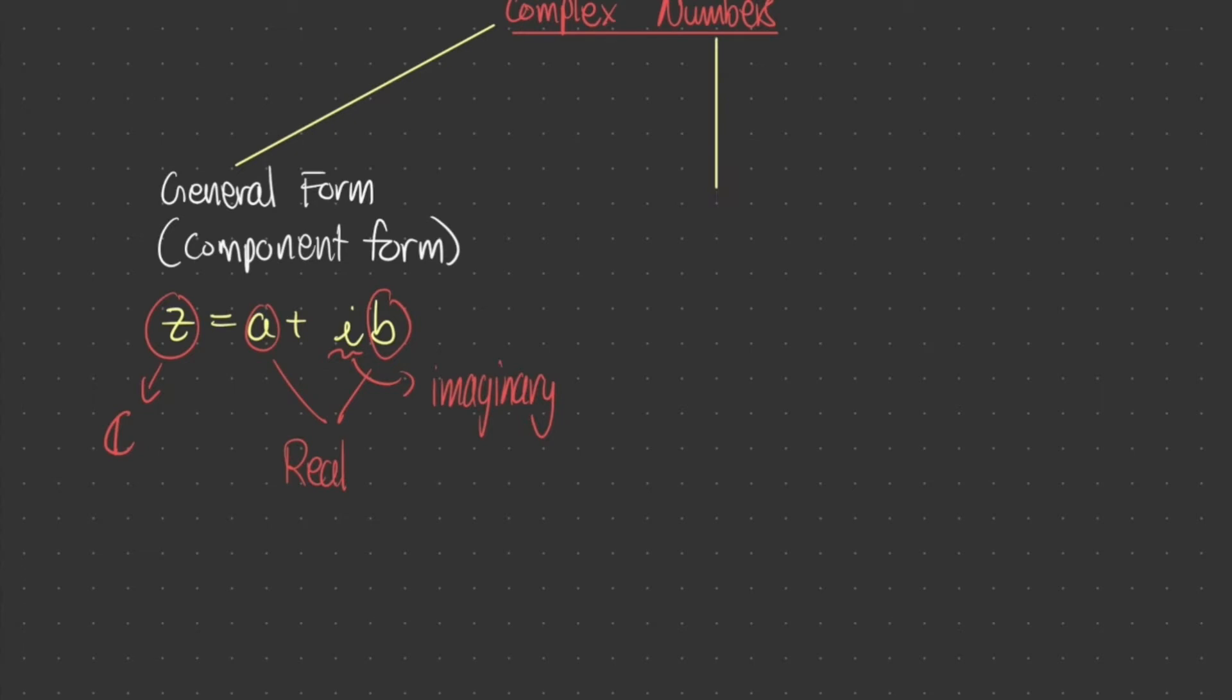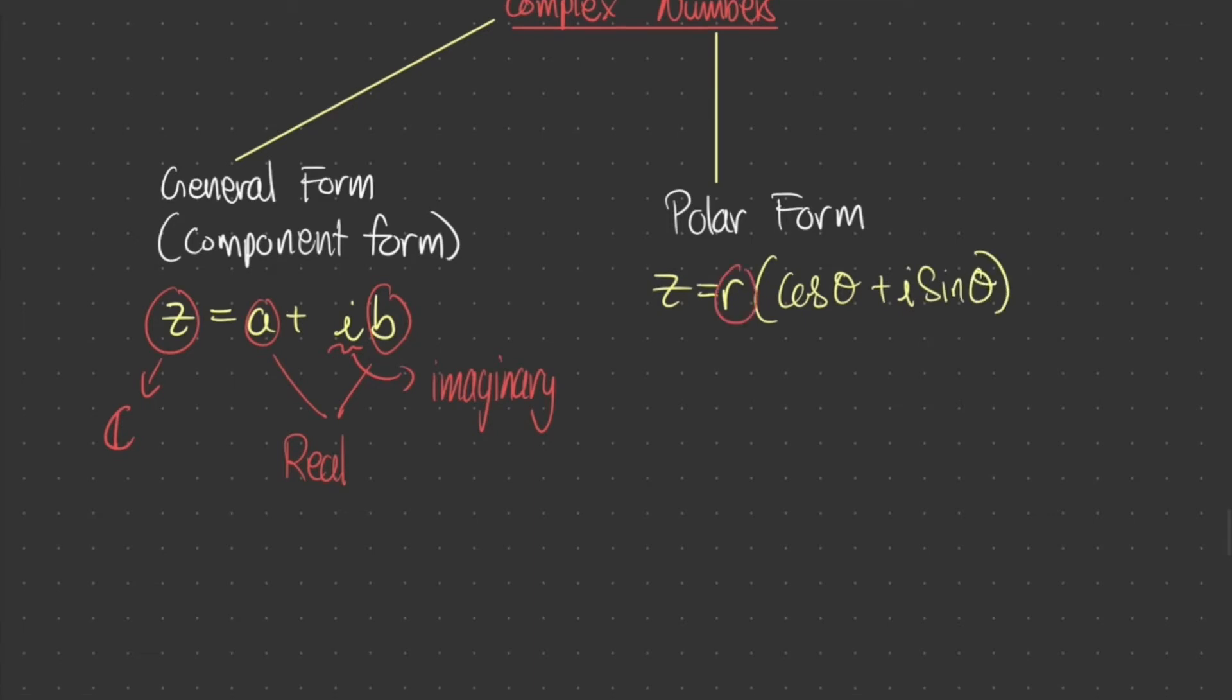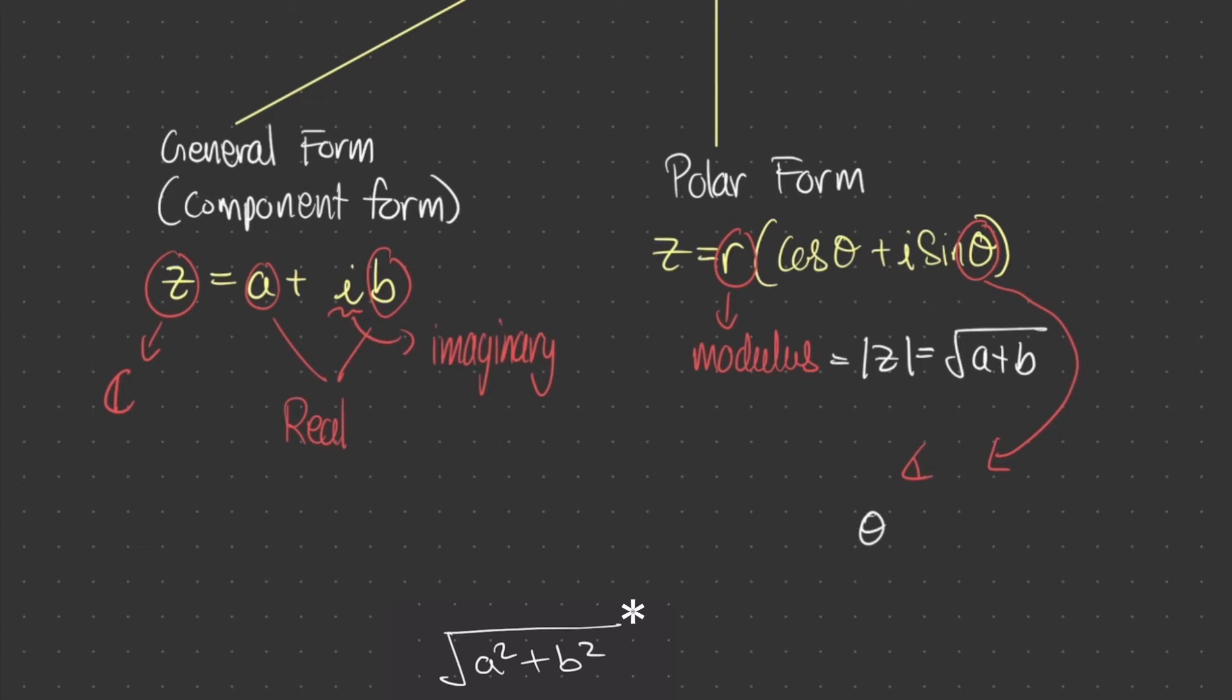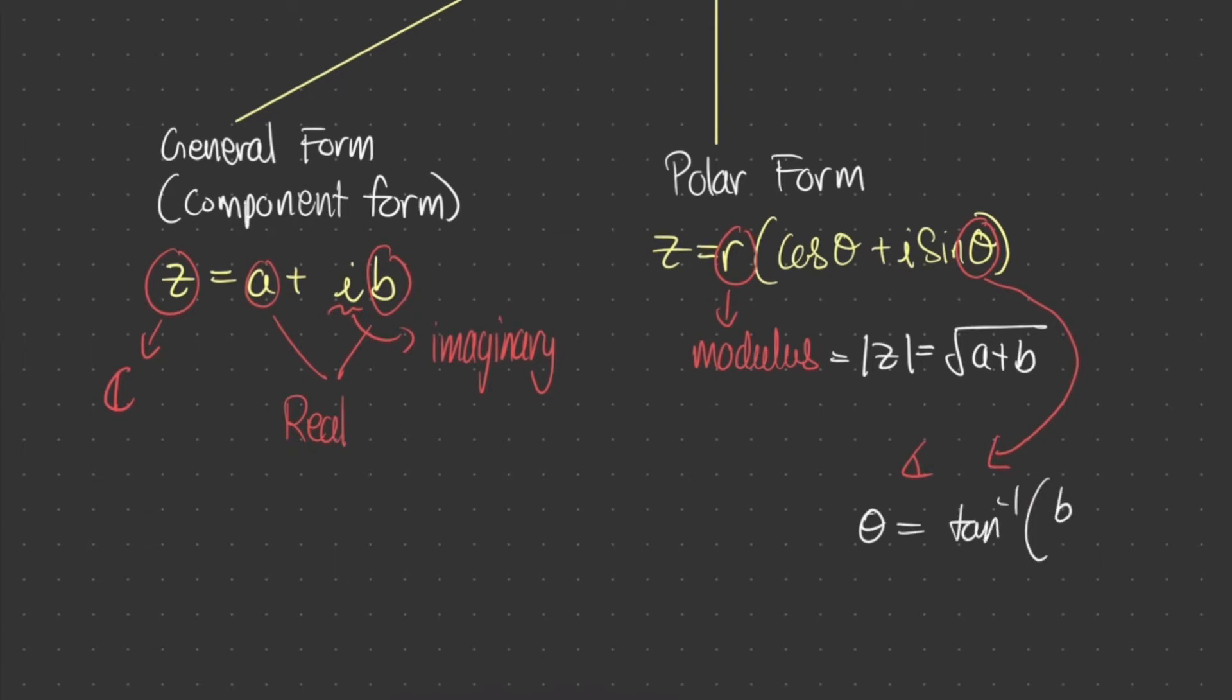The other form we're going to look at is called the polar form. This can be expressed as z is equal to r bracket cos theta plus i sine theta bracket. r here is your modulus. Remember this term. And this can be represented as straight bracket z straight bracket. And it's equal to square root of a squared plus b squared. Now your theta is the angle. And that's equal to tan inverse b on a.